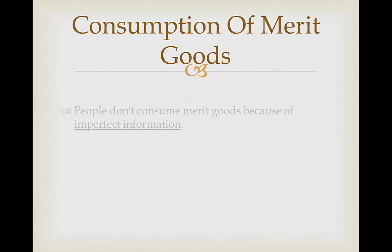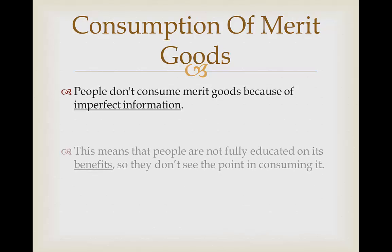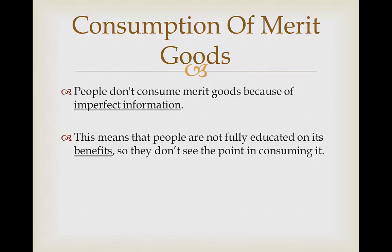The consumption of merit goods. People don't consume merit goods because of imperfect information. Imperfect information basically means that they're not educated on the benefits of the merit good, so they don't see the point in consuming it. Sticking with our example of fruit, people may not be educated fully to know that fruit is really good for you and good for the body, good for health. As a result, they don't consume as much of it because they don't perhaps see it as that beneficial to them.